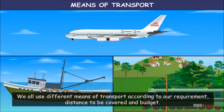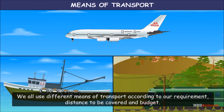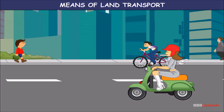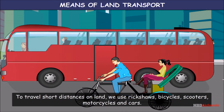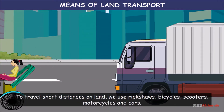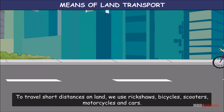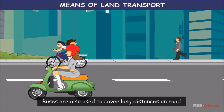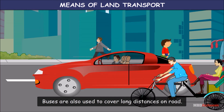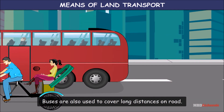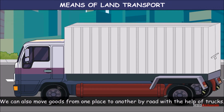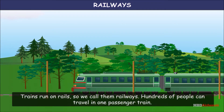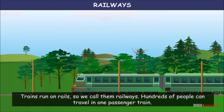We all use different means of transport according to our requirements, distance to be covered, and budget. Means of land transport: to travel short distances on land, we use rickshaws. Buses are also used to cover long distances on road. We can also move goods from one place to another by road with the help of trucks.